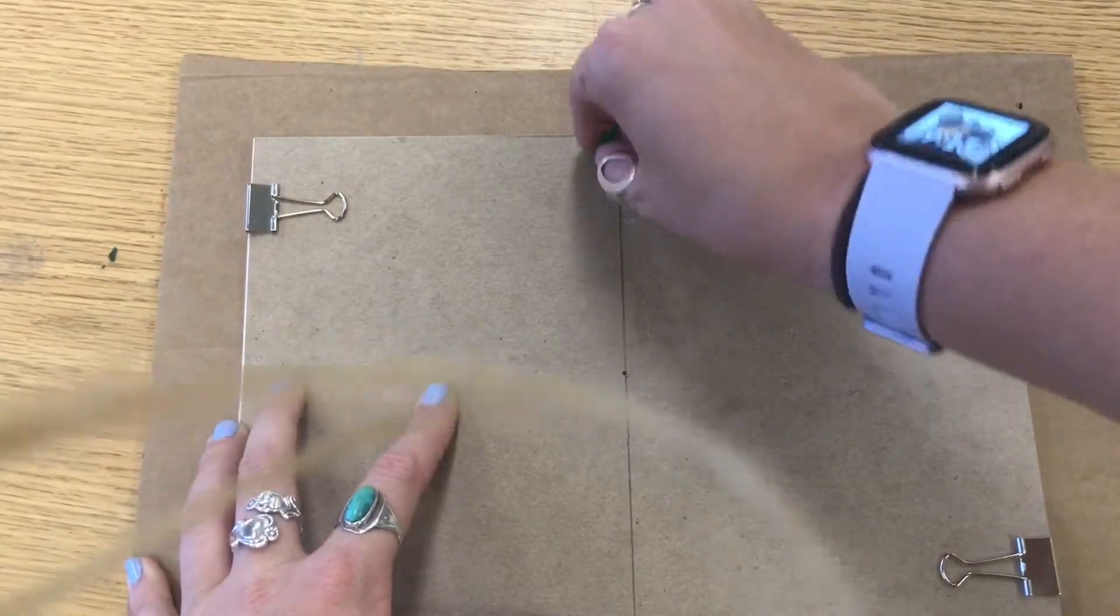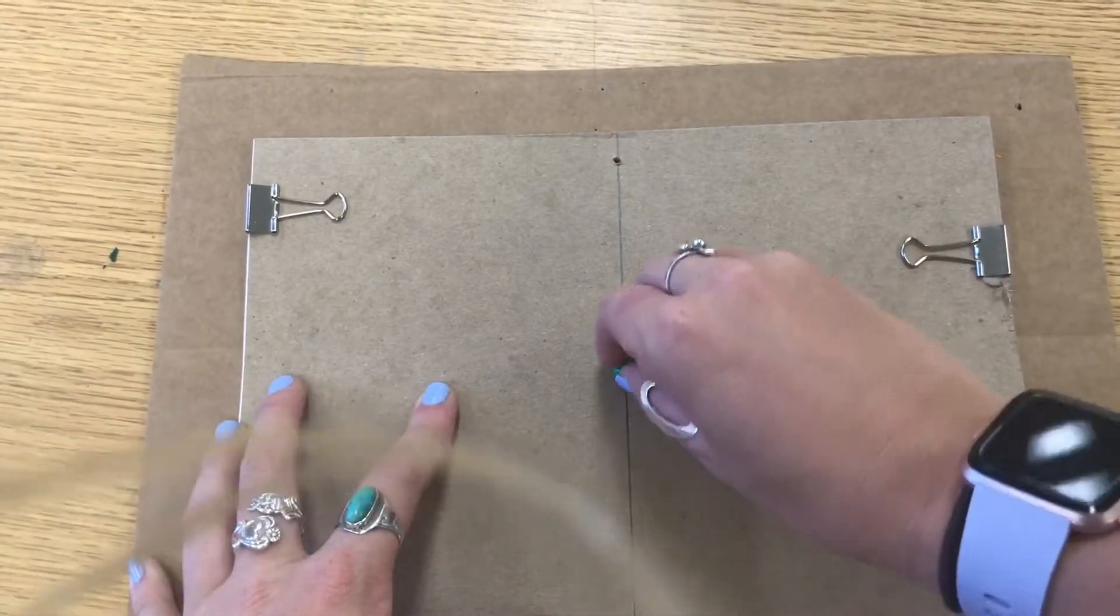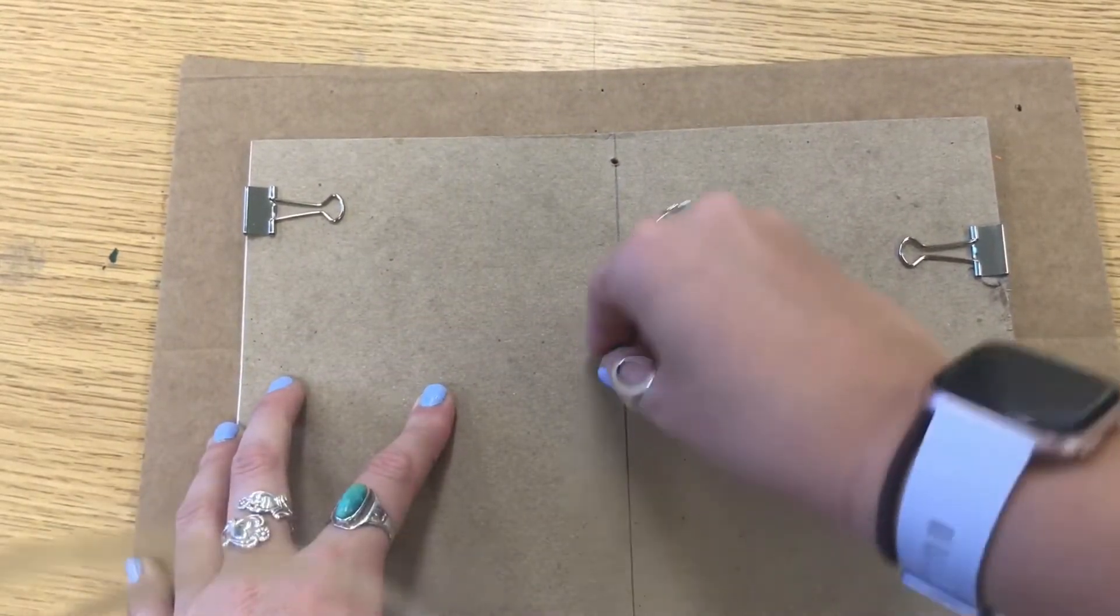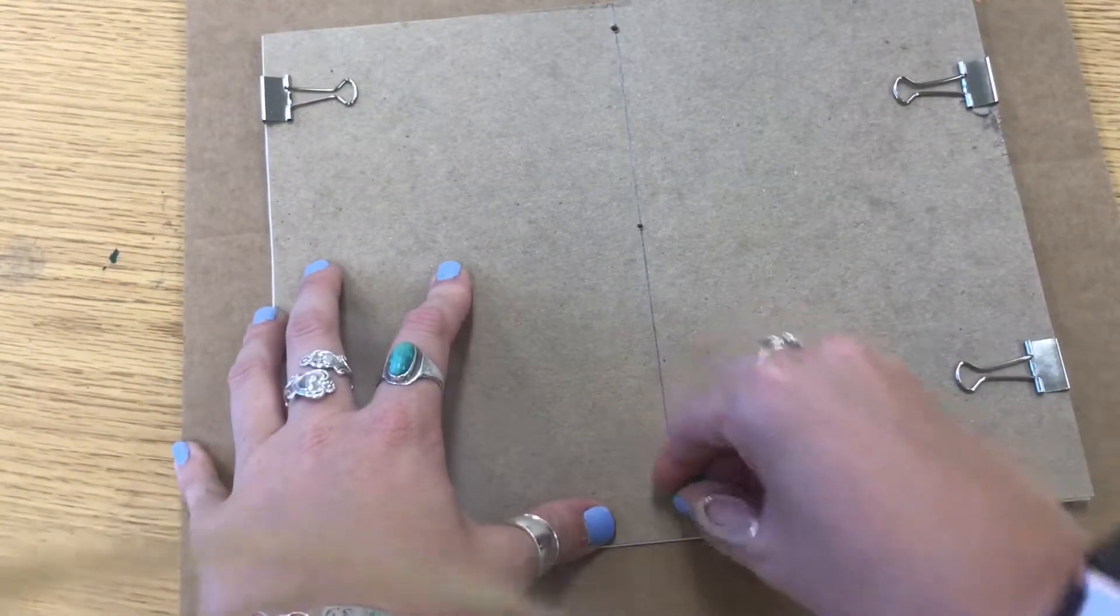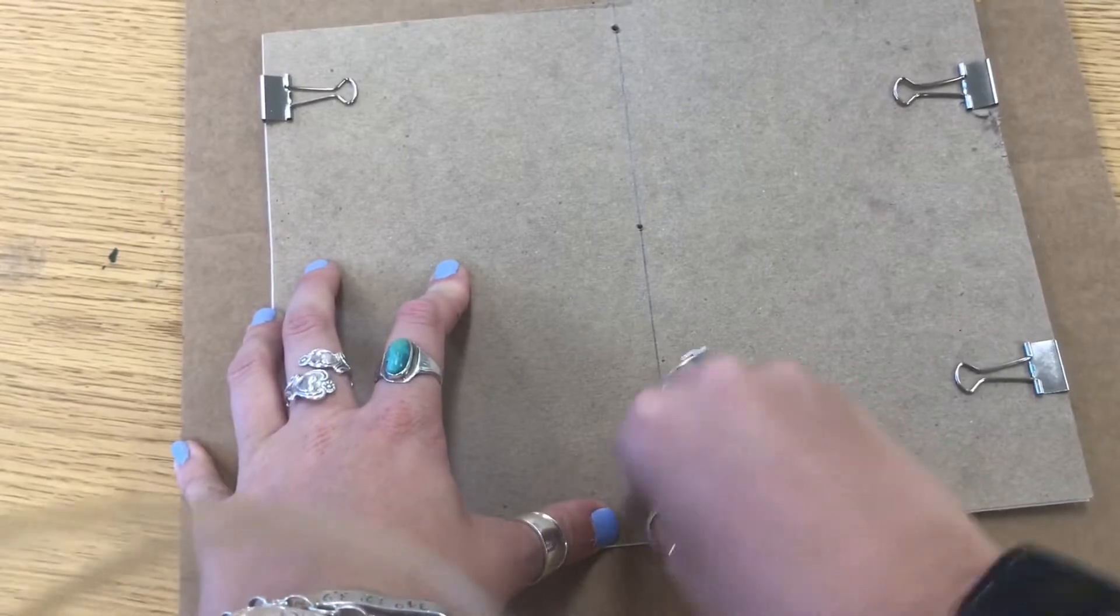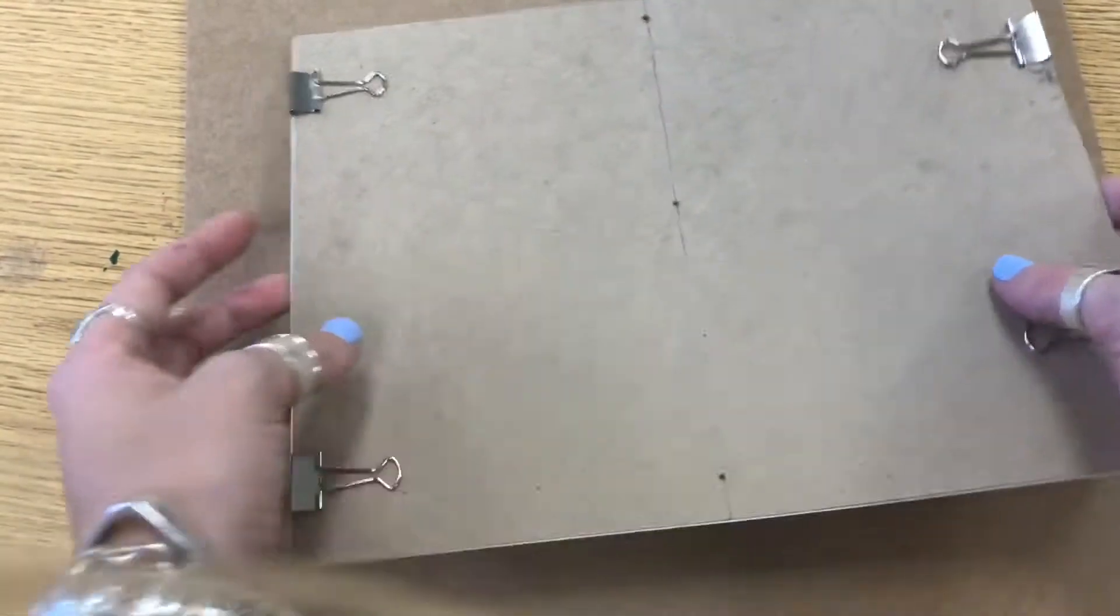One at the top, one in the middle, and one at the bottom. Notice how when I poke it through, I'm wiggling it around to make the hole a little bit bigger. That's so that we can get the needle in and out of the hole without any difficulties.